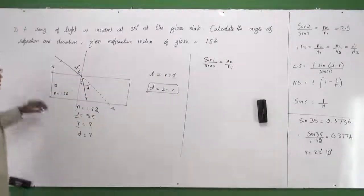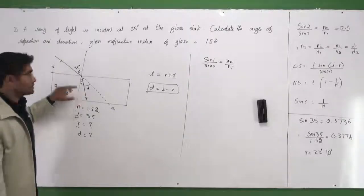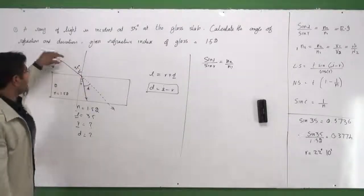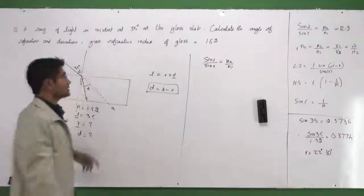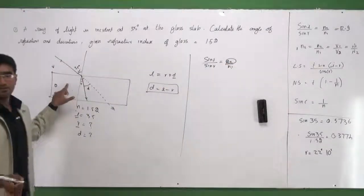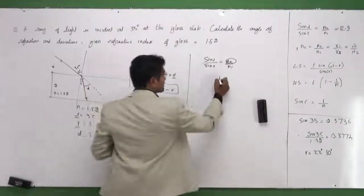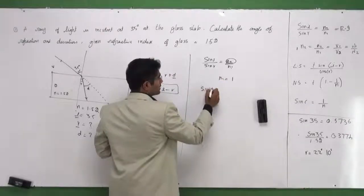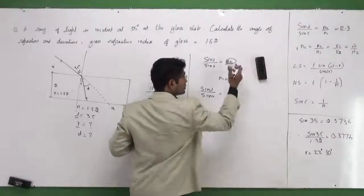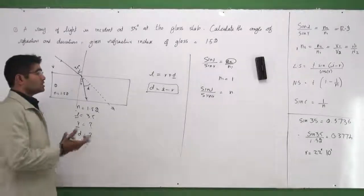So I can write sin i by sin r is equal to n2 by n1. n2 is the refractive index of the medium to which light is going. This is the second medium, this is the first medium. Light is entering this medium 1, and this is medium 2. So n2 is the refractive index of the second medium. And if light is coming from air, I generally take n1 as 1. So what happens to my formula? sin i by sin r would be equal to n. I would not use n1 and n2 because I have only one n.